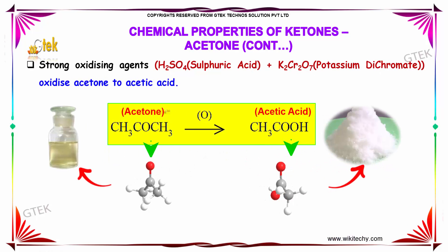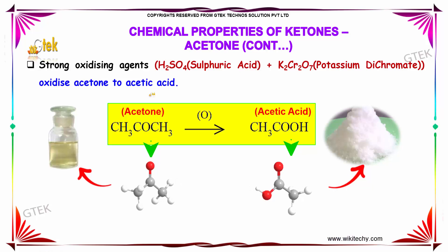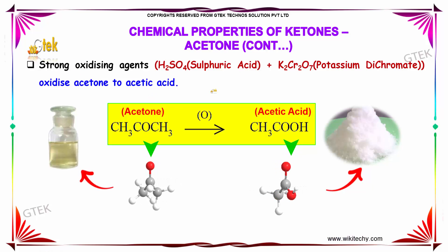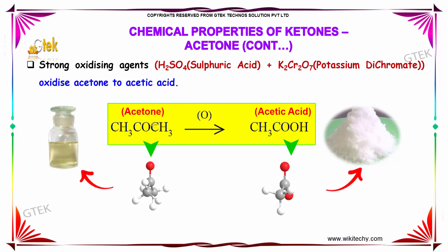Chemical properties of ketones. Strong oxidizing agents like sulfuric acid and potassium dichromate oxidize acetone to acetic acid.